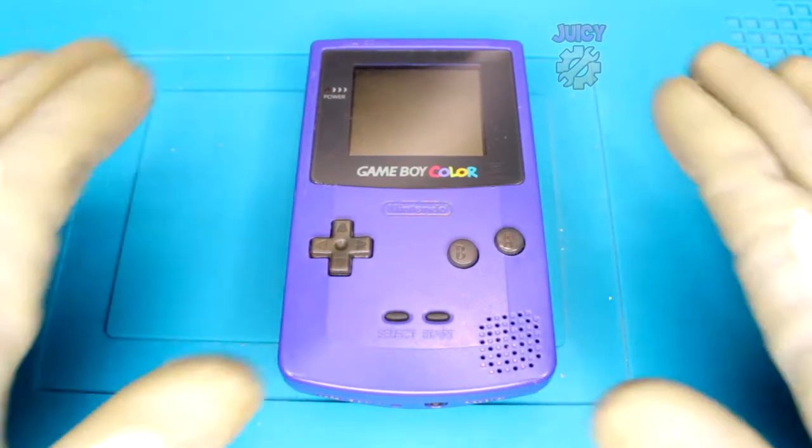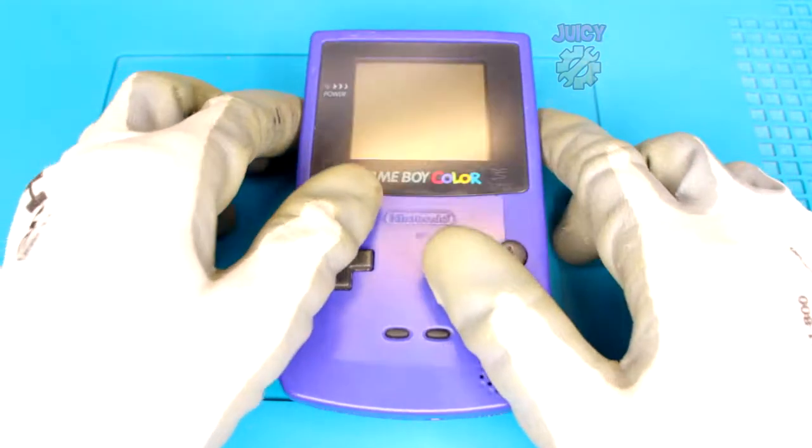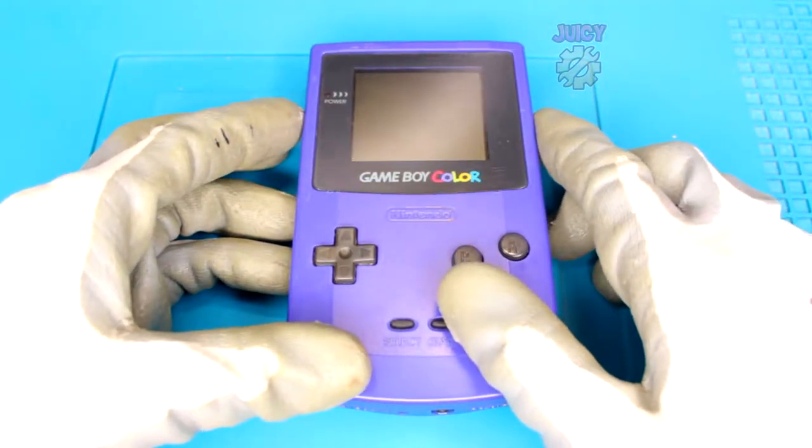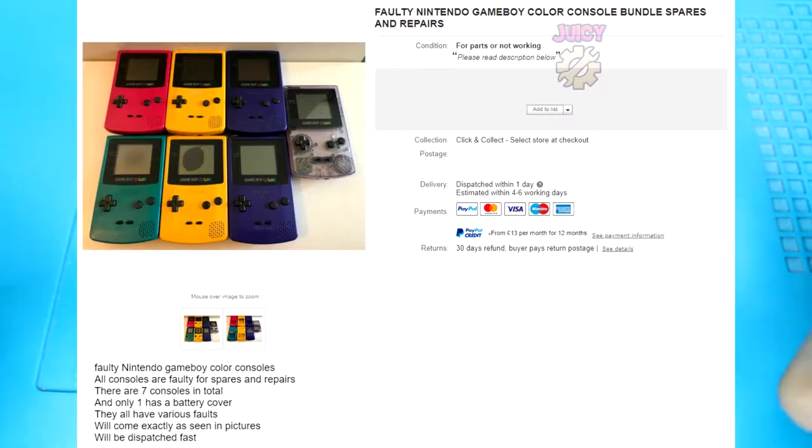Welcome to Trash and Cash. In this series I fix up eBay junk to see if I can turn a profit. And in this episode I have a Game Boy Color, not just any Game Boy Color, it's from this big bundle that I purchased.